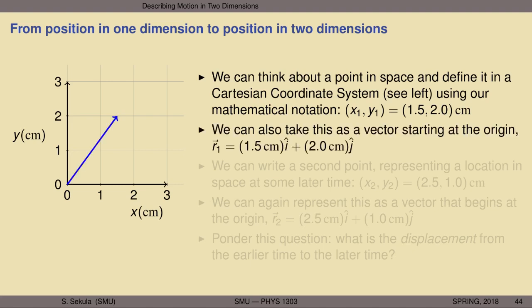We can represent this point in space as a vector. The vector begins at the origin and its arrowhead reaches the point (1.5, 2). We write this vector in two dimensions using the letter r with a subscript 1 and a vector arrow. In vector notation this is a vector with a horizontal component of 1.5 cm in the i-hat direction and a length of 2 cm in the vertical direction denoted by j-hat.